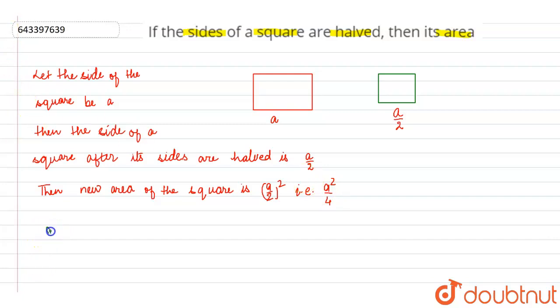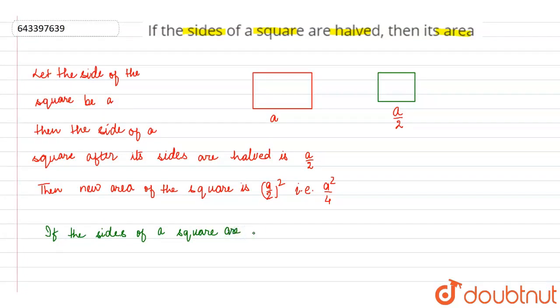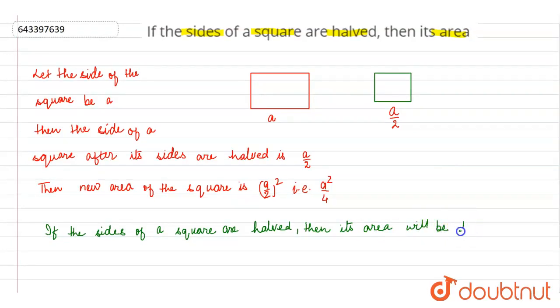So we can write if the sides of a square are halved then its area is a upon 2. So this square will be 1 by 4 times of initial area, so this is the answer.